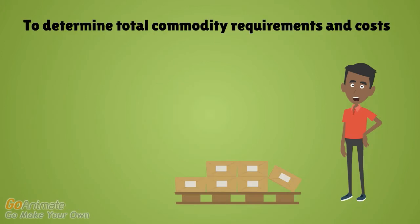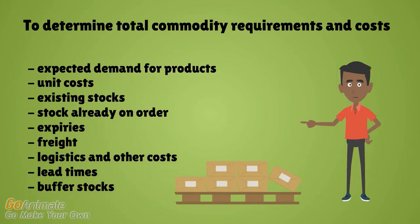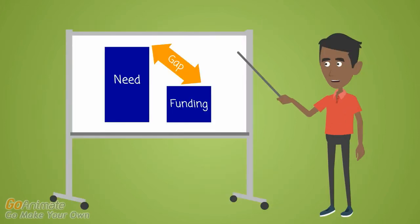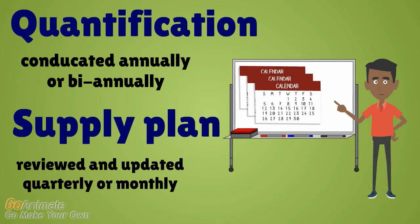To determine total commodity requirements and costs, quantification takes into account the expected demand for products and other factors such as existing stocks, lead times, and buffer stocks. These are compared with the available funding to determine the final quantities to procure. Quantification should be conducted at least annually or biannually, and the supply plan reviewed and updated quarterly or monthly to adjust for changes in consumption, increased demand, and program changes.